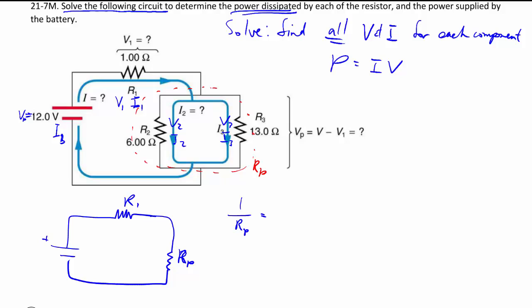And as we've seen, whenever we have parallel, we have to do this funny addition of reciprocal to combine them together. In this case, the two involved is R2 and R3, which are given to us. That's your 6 ohm plus 1 over 13 ohms.